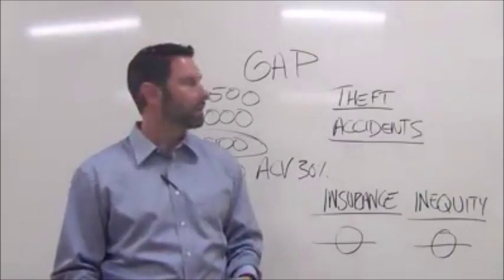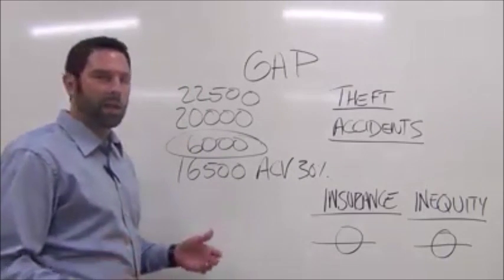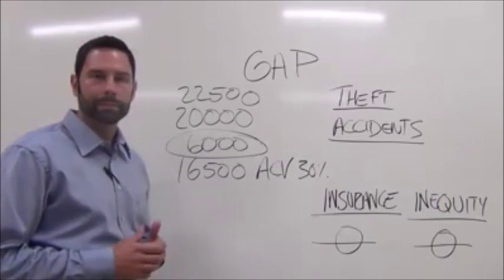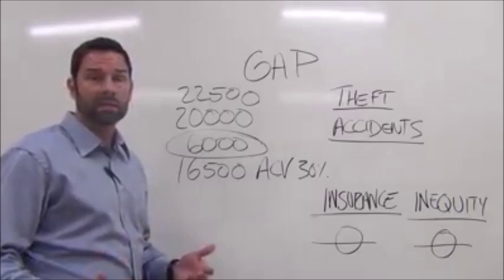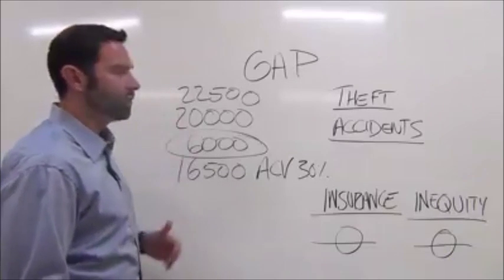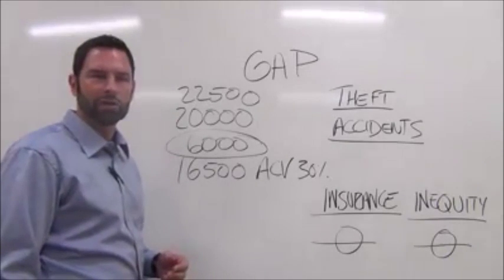So here's how it works. Let's say the vehicle that you're buying today is worth roughly $20,000. With tax, title, license, it brings it up to about $22,500, usually about 12% of the purchase price.